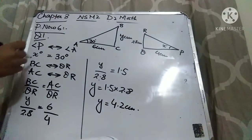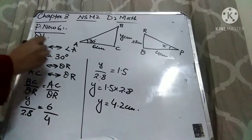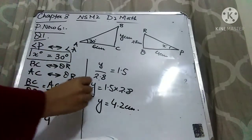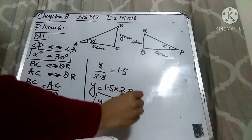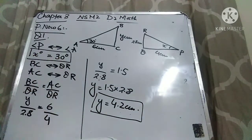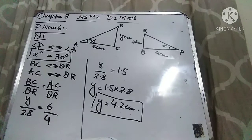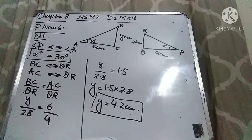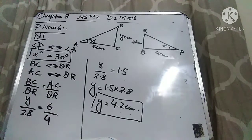So the unknowns are found: the value of X is 30° and the value of Y is 4.2 cm. We have found the values of the unknowns in question number 1. Let's come to question number 2.